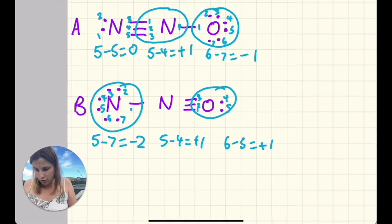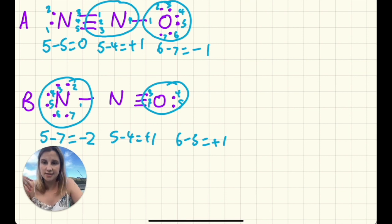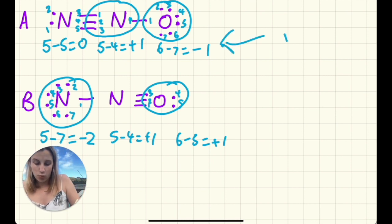So if we're looking overall at these and deciding which one is more stable, first of all you want your formal charges to be minimized. You want to be closer to zero. So this one actually makes way more sense—this is the preferred Lewis diagram.